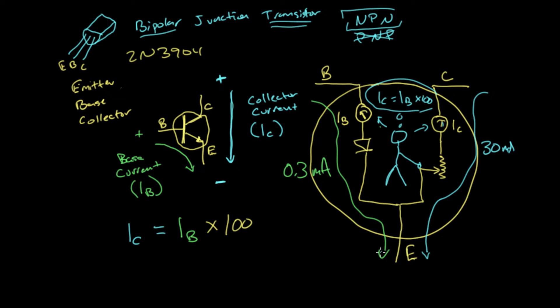So by using a transistor, we can take that 0.3 milliamp current and essentially amplify it to 30 milliamps. Now in reality, an LED is not going to draw 30 milliamps, particularly if we have a resistor in line.